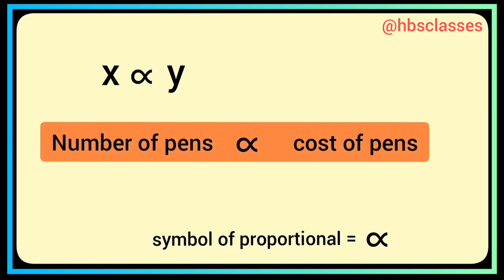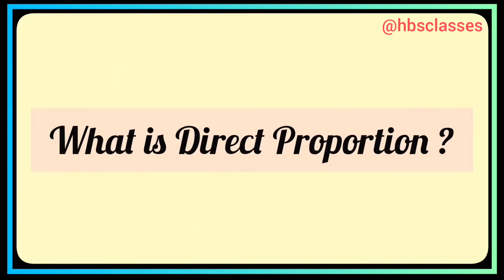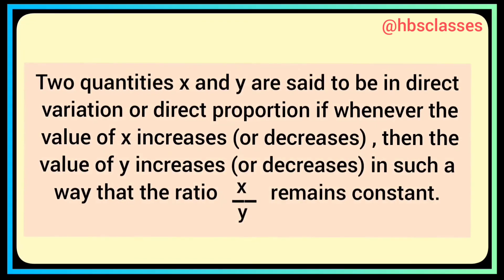So what is direct proportion? Two quantities x and y are said to be in direct proportion if whenever the value of x increases or decreases, the value of y increases or decreases in such a way that the ratio of x and y remains constant.